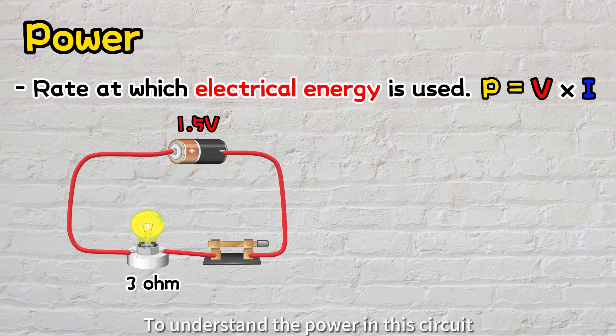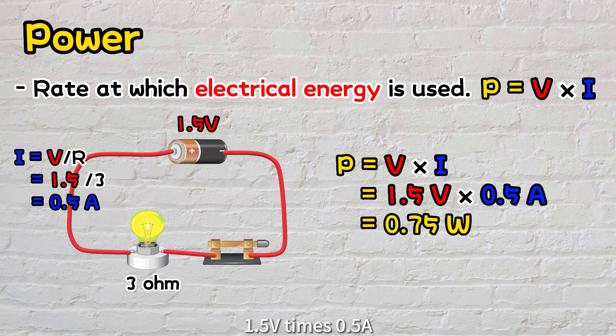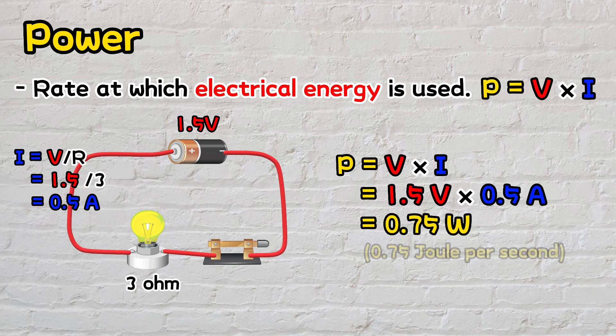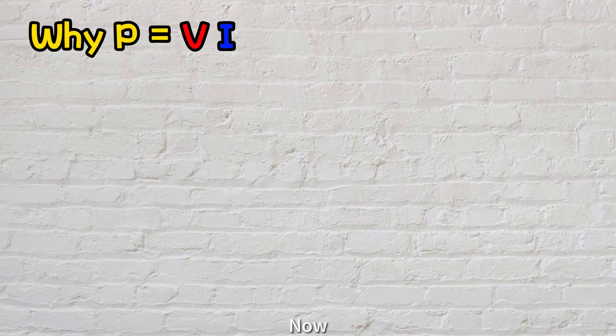To understand the power in this circuit, we use a simple equation: power equals voltage times current. In this case, the current is 0.5 ampere, so when we do the math, 1.5 volts times 0.5 ampere, we find that the power used by the light bulb is 0.75 watts. This means the bulb consumes 0.75 joules of energy every second.